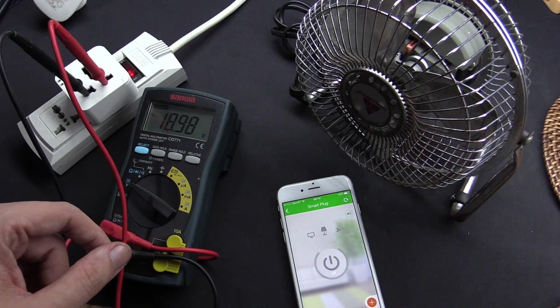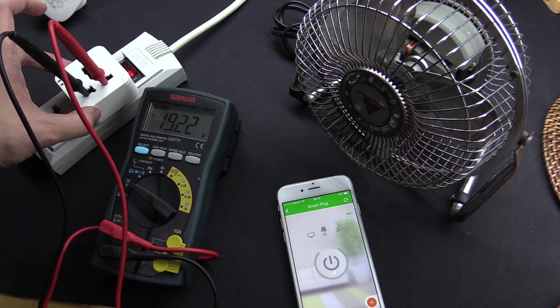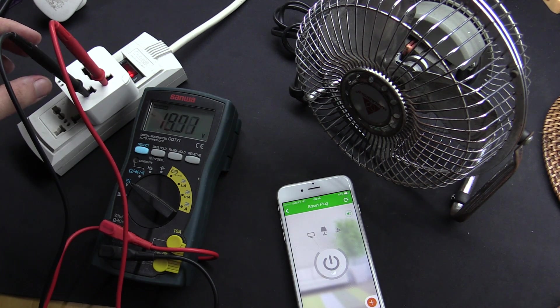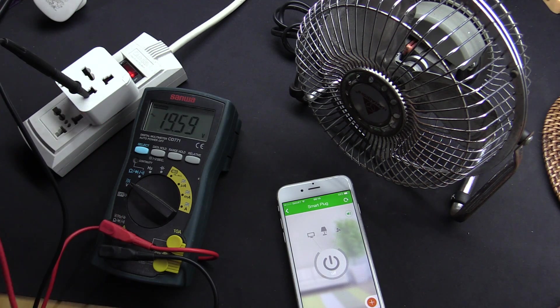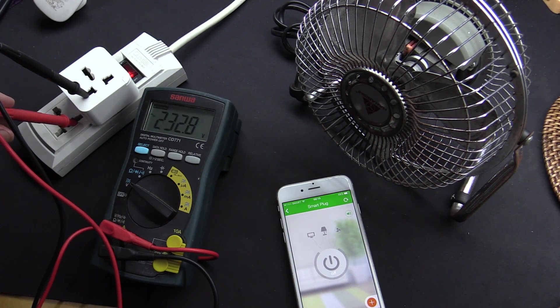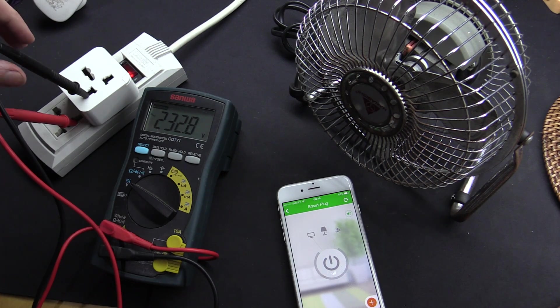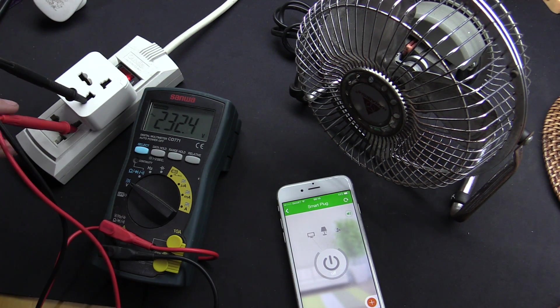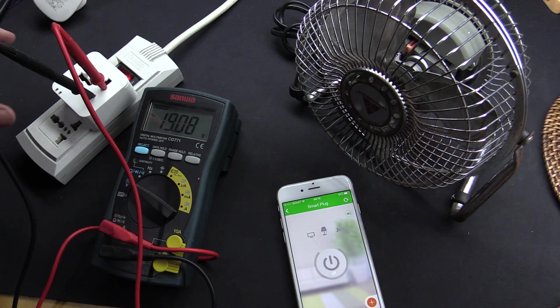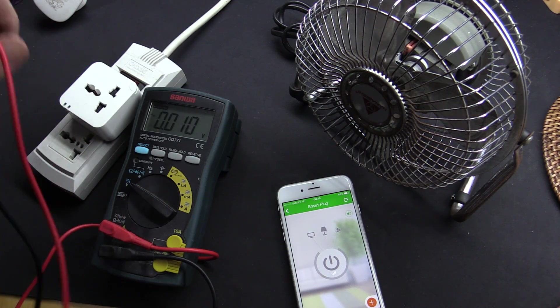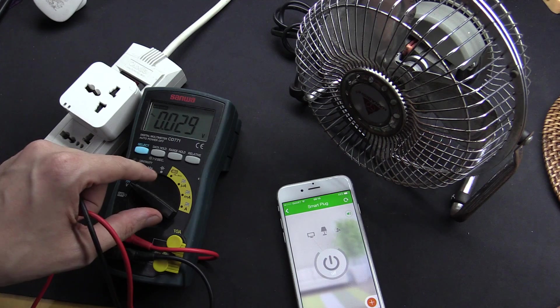Now, for the technically-minded people out there, you should know that only one side of the AC is switched, and I can show that with my multimeter. If I take this and put it in this empty socket, you can see 232 volts AC. So only one side is actually being switched. If I put this back here, you'll see we no longer have the 230 volt AC. So only one side of the AC is being switched.